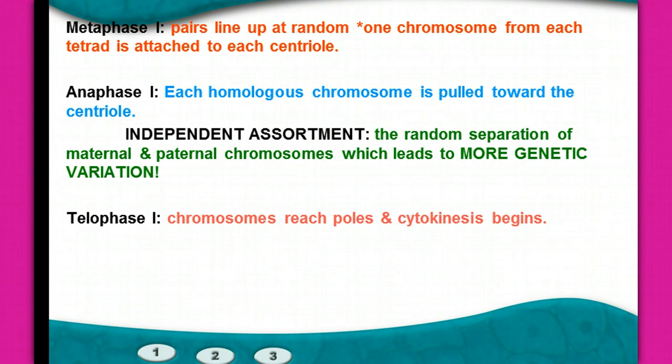In metaphase I, the pairs line up at random — one chromosome from each tetrad is attached to each centriole. In anaphase I, those homologous chromosomes are then pulled towards the centriole, so the maternal chromosome and the paternal chromosome go to opposite poles. This is called independent assortment.